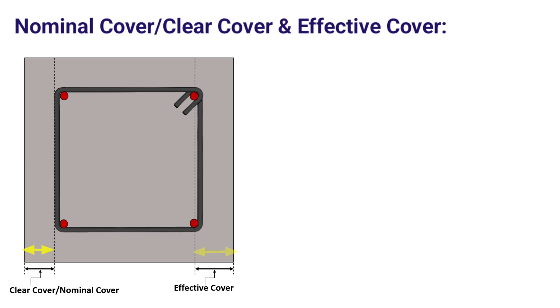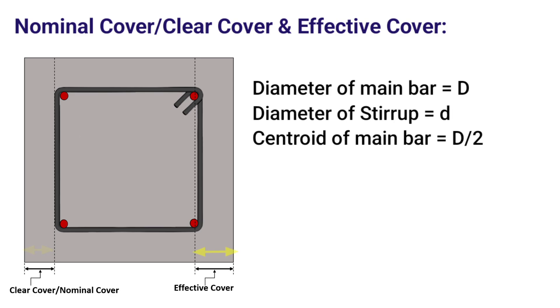To understand this, let's consider the cross section of a member. Let D be the diameter of the main bar and small d be the diameter of the stirrup. Centroid of main bar is equal to D/2. Hence effective cover will be equal to nominal cover plus diameter of stirrup plus centroid of main bar, which is D/2.